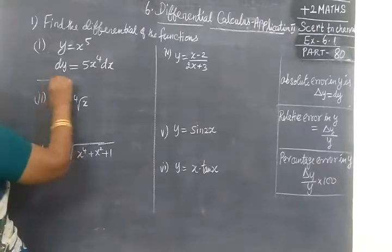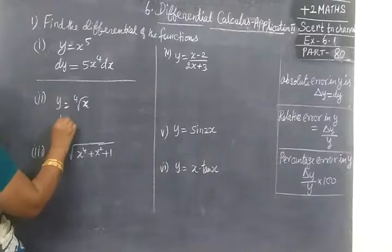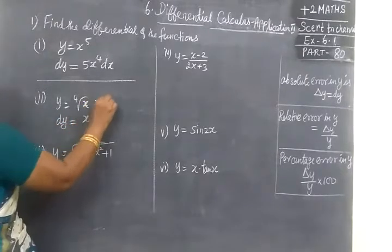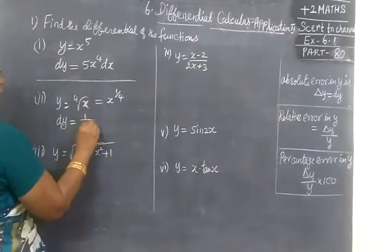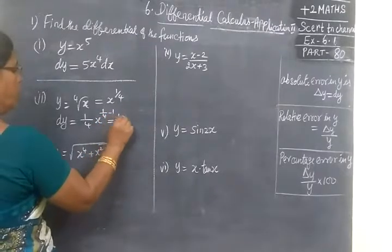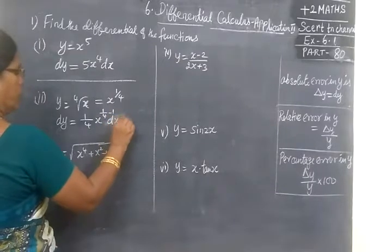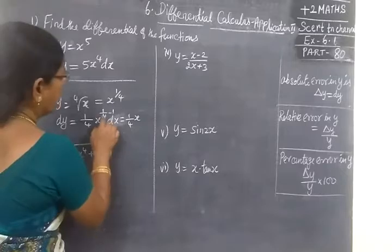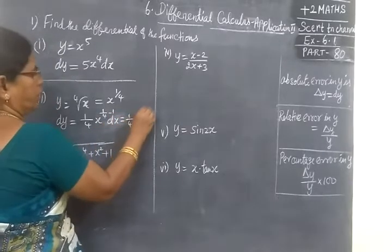Then, next one. Y equal to 4th root of S. So dy by dx, dy equal to x power 1 by 4. So n into x power n minus 1. So 1 by 4, n minus 1, dx equal to 1 by 4 x power 1 minus 4 minus 3. So minus 3 by 4.